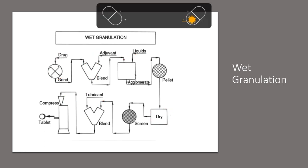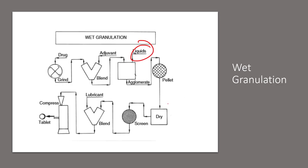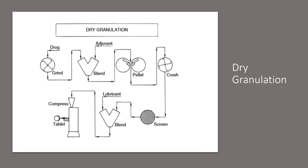The key difference between wet granulation and dry granulation is the presence of liquids and drying. In wet granulation, you use liquids to form the mass for granulating. For dry granulation, you simply grind the drug, add your excipients, blend and pelletize directly without any liquid involved. Once you have your pellets — either by slugging or by roller compaction — you crush and screen, ending up with irregularly shaped granules formed by compression rather than adhesion by water. After screening for uniform granules, you blend with lubricant and compress.